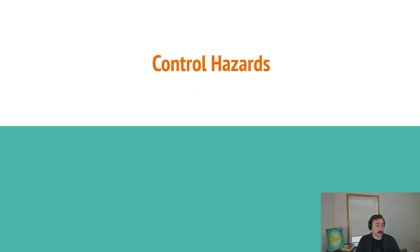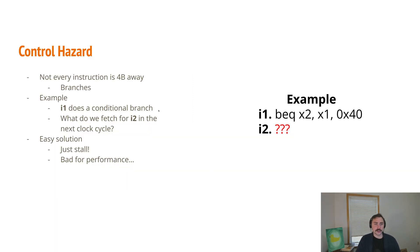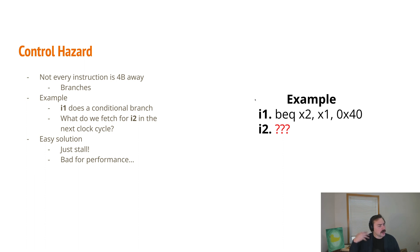The last type of hazard we'll talk about today is control hazards, aptly named because they're about control flow — things like branches. Not every instruction is four bytes away. Our instructions are 32 bits, which is four bytes, so in many cases we just increment the program counter by four to index the next instruction. But with a branch equal instruction, we have to wait until we compare two register values to know whether we go to PC plus four or to PC plus some offset. So what do we fetch on the next clock cycle?